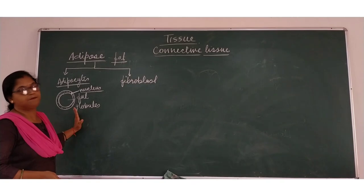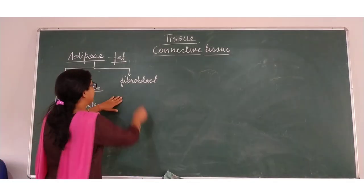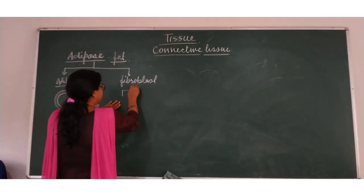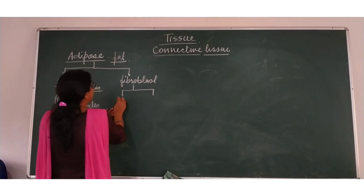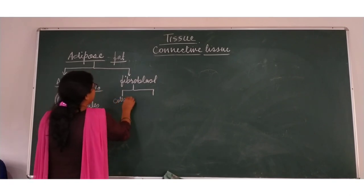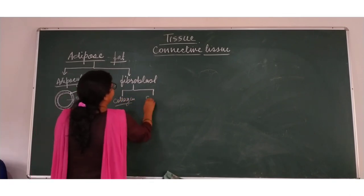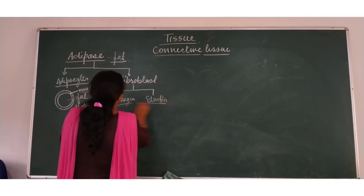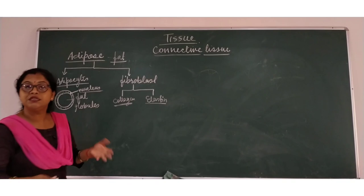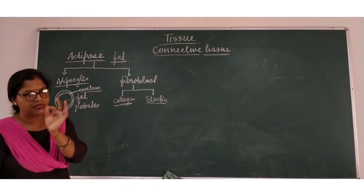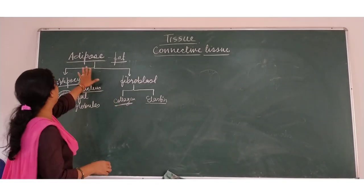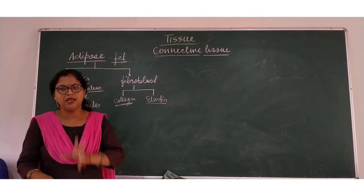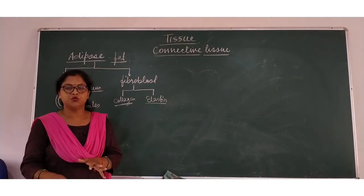Fibroblast secretes two types of fibers. They are collagen and elastin which is already explained in areolar tissue. These two are secreted by fibroblast but they are very few in adipose tissue.